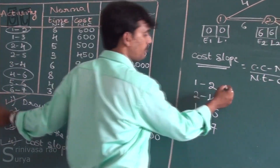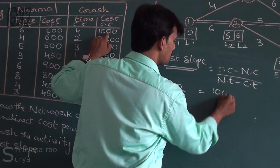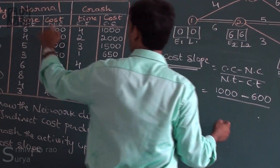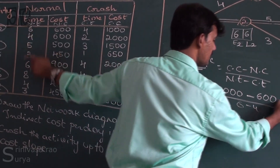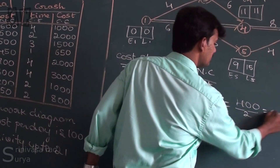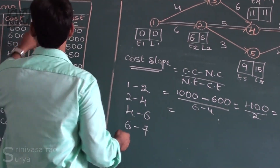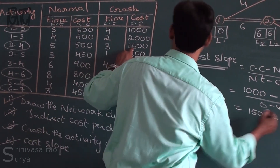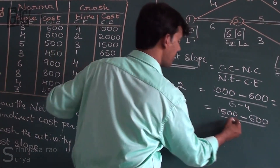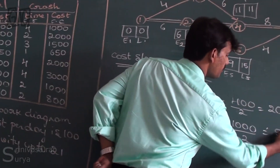For activity 1 to 2: cost slope = (1000 minus 600) divided by (6 minus 4) = 400 divided by 2 = 200. For activity 2 to 4: cost slope = (1500 minus 500) divided by (5 minus 3) = 1000 divided by 2 = 500.